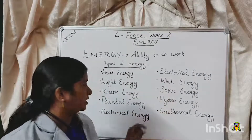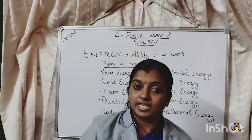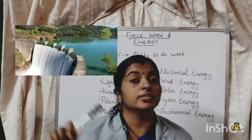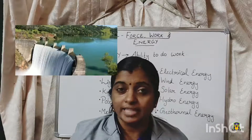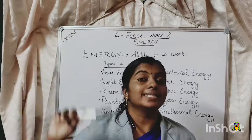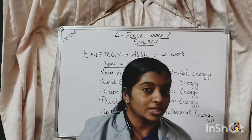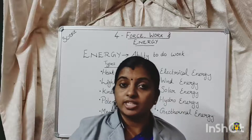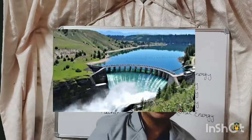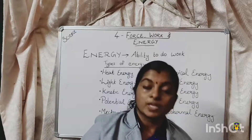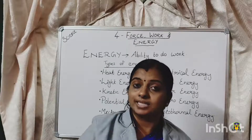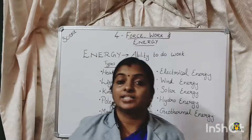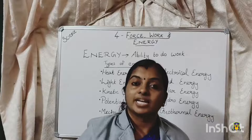Then, mechanical energy. Mechanical energy is actually a combination of kinetic energy and potential energy — it includes both types. For example, water is stored in a dam. The water stored at a particular height possesses potential energy, since it is at a higher position. And when the shutters of the dam are opened, this water flows with great speed, so now it possesses kinetic energy. So the water in a dam has both potential and kinetic energy — that combination is mechanical energy.